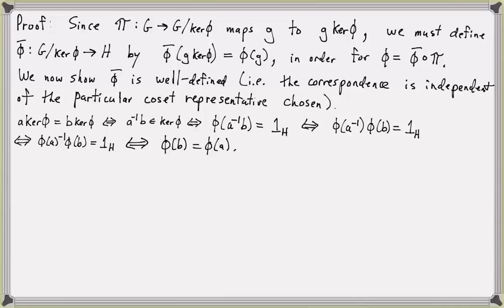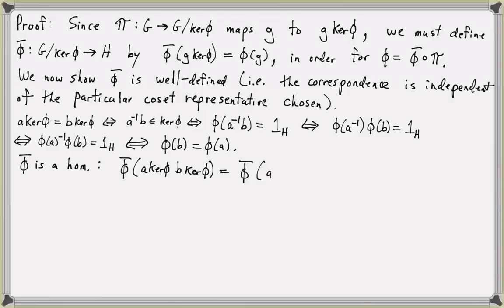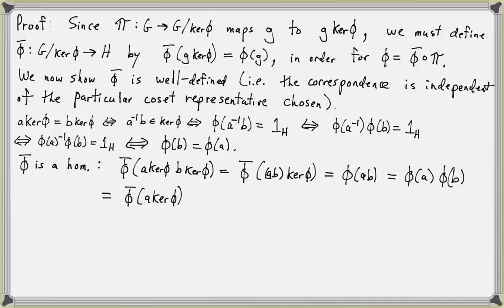Now let's show that phi bar is a homomorphism. We see that phi bar of (a kernel(phi)) times (b kernel(phi)) equals phi bar of ab kernel(phi), which equals phi of ab. By properties of phi, this equals phi of a times phi of b, which equals phi bar of a kernel(phi) times phi bar of b kernel(phi). So phi bar is a homomorphism.